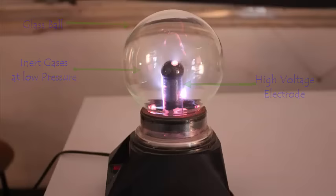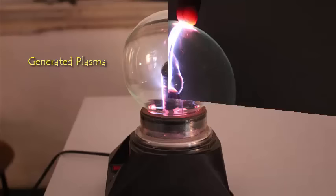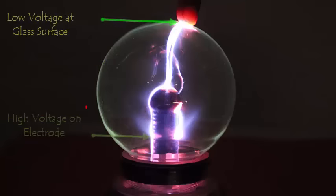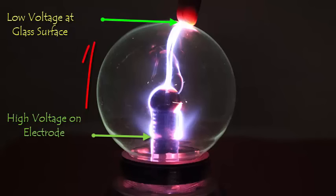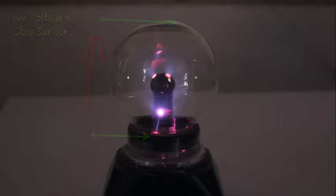As we power our plasma ball, you can see the gas inside turns into plasma, and they travel from high voltage electrode to low voltage through our fingers, and this shows our body is like a conductor.